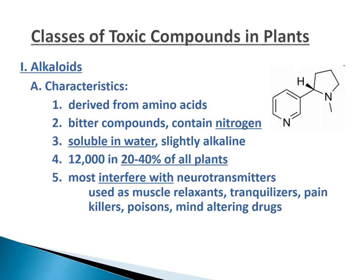Classes of toxic compounds in plants. First: Alkaloids — nitrogen-containing, solid in water, interfere with neurotransmitters. Around 12,000 are known, found in 20 to 40 percent of plants.